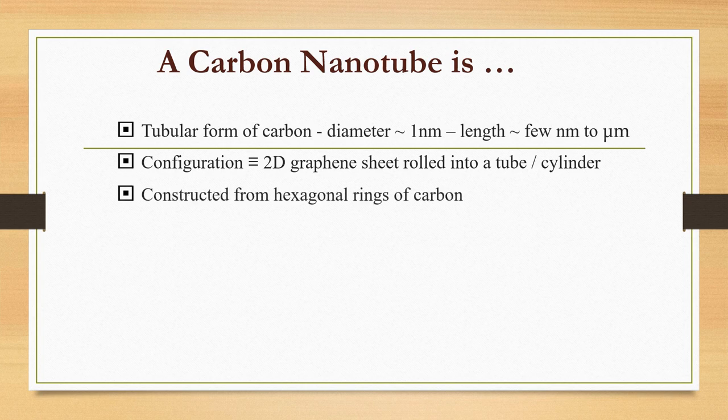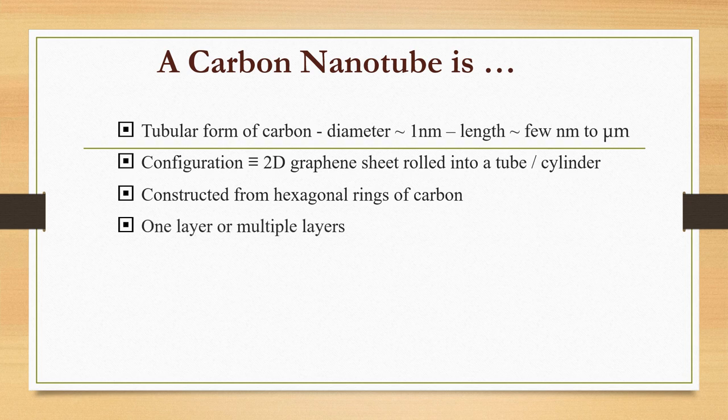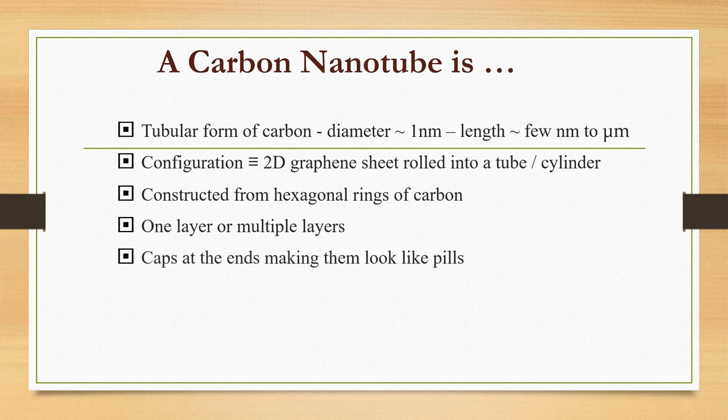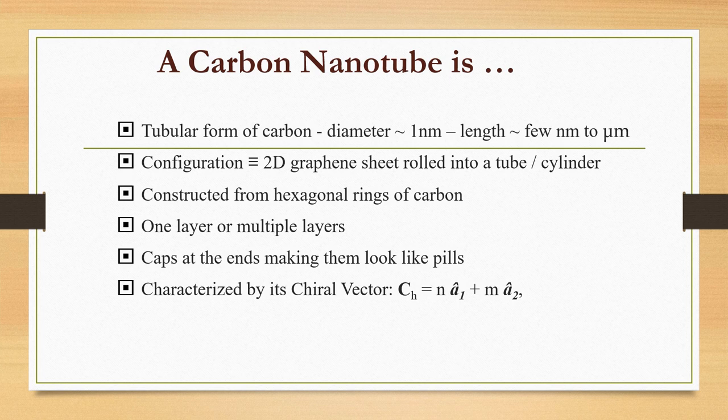A carbon nanotube is characterized by its chiral vector CH equal to Na1 plus Ma2 and the chiral angle theta with respect to the zigzag axis. The twist of the nanotube is denoted by its chirality.